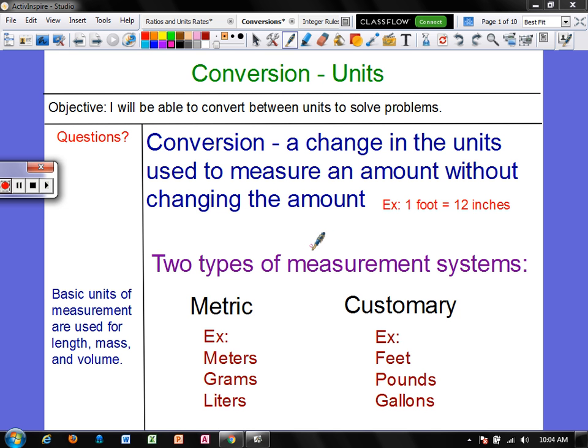So conversion is just a change in the units that are used to measure something, but the amount that is there does not change. For example, if you had a piece of string that was one foot long, that piece of string we could say is 12 inches long. It's still the same amount of string, but we are using two different types of units to identify the measurement.